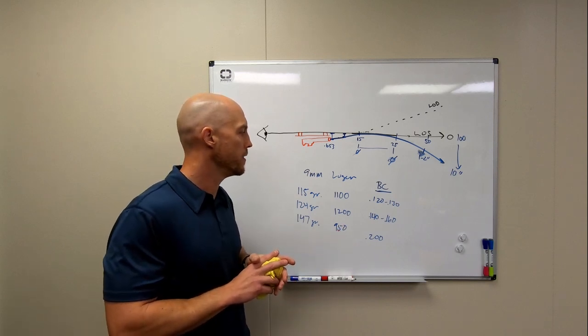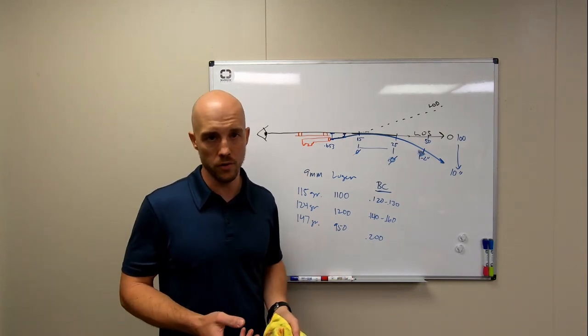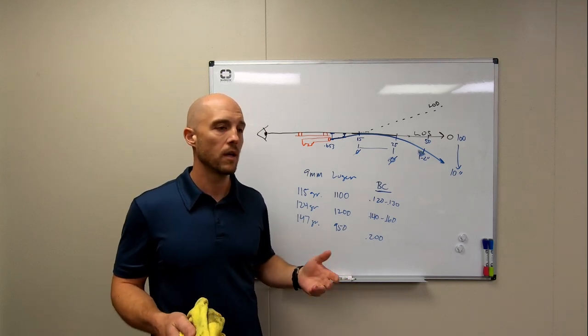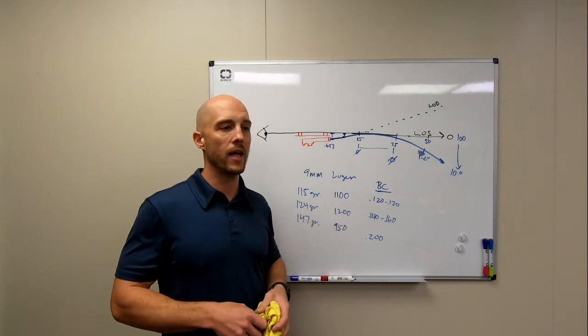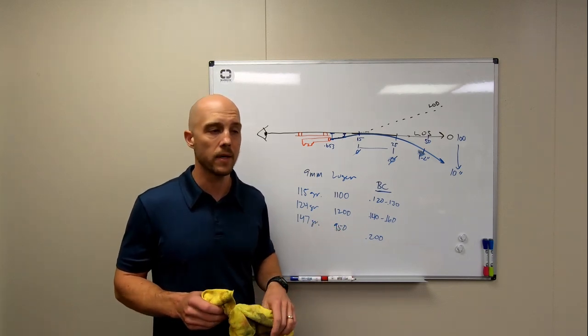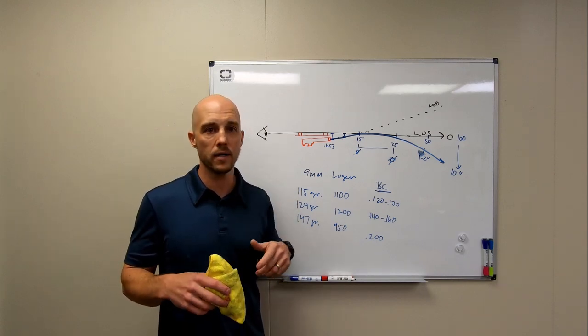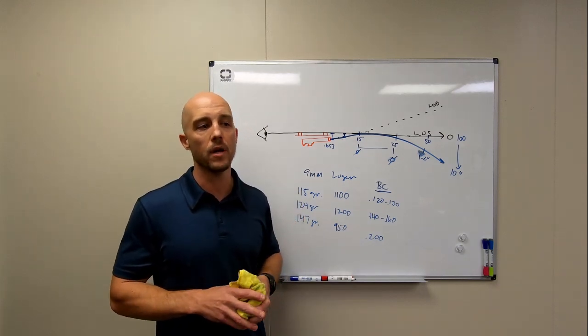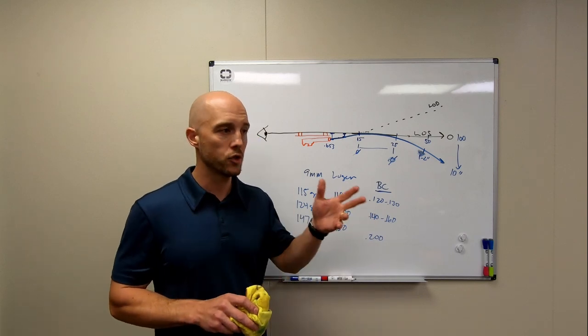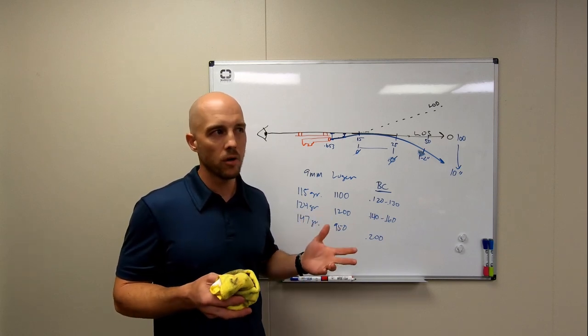And then the only other caveat would be, there are some guns that just don't like certain loads. So you might discover that just for whatever reason, a Federal HST doesn't shoot well in your gun. Can't say I can explain that, because there's a lot of things happening in terms of internal ballistics. There's lots of things that can happen or can affect how consistent a projectile flies through the air out of a given gun.